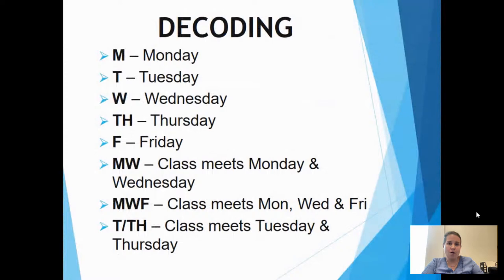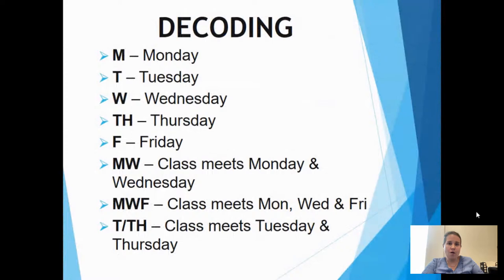To decode the schedule further: classes with M meet Monday, T is Tuesday, W is Wednesday, TH is Thursday. So MW means Monday and Wednesday; MWF is Monday, Wednesday, Friday; T/TH is Tuesday and Thursday. Note that sometimes Thursday is listed as R and Tuesday as T, which can be a little confusing. Make sure you are aware of the correct days and times your classes meet.